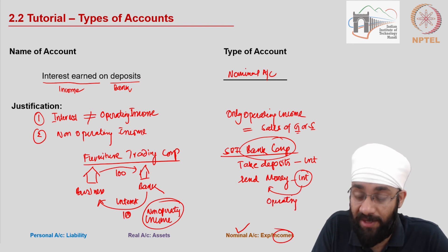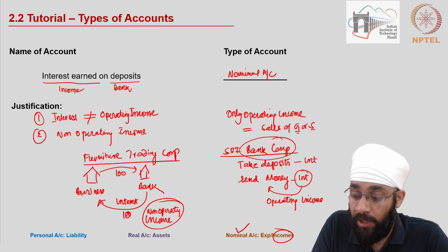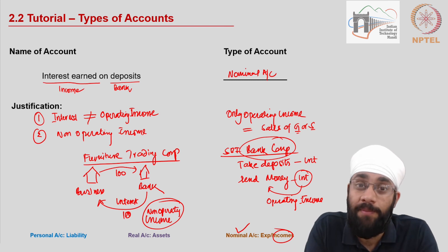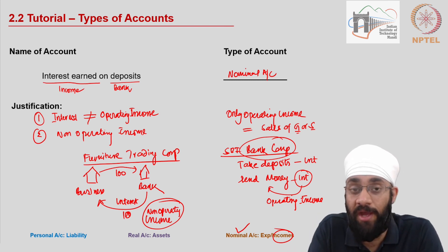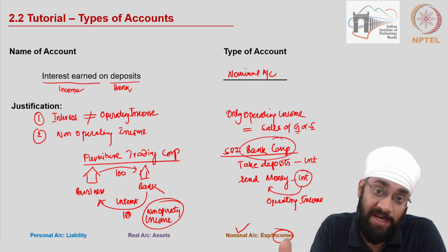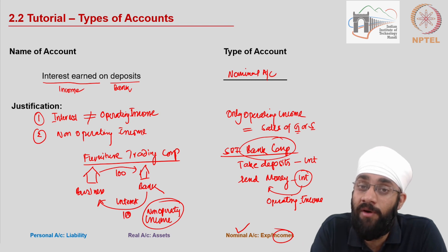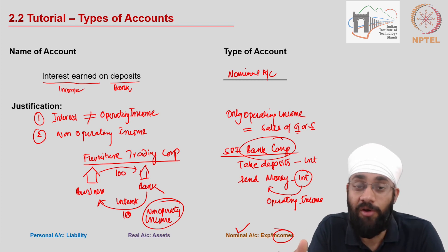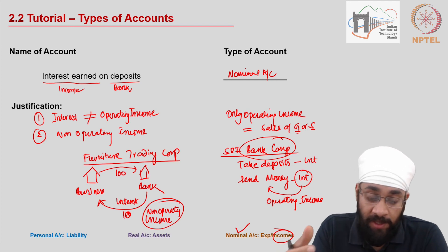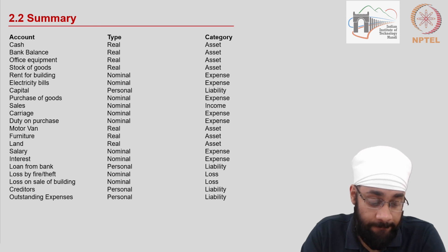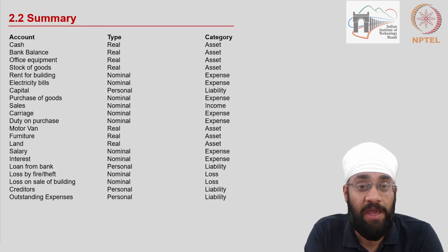For a bank, lending and earning interest is the primary activity — it's operating income, not a finance cost. You should look at the purpose of the business and what it does on a day-to-day basis — its primary activities — in order to decide whether an account is operating or non-operating in nature. With that, we are done with all the various different types of accounts.